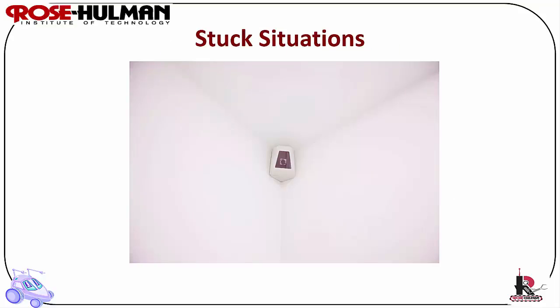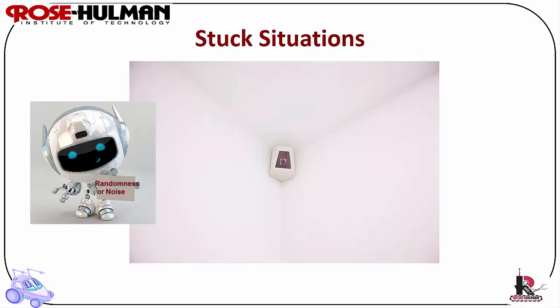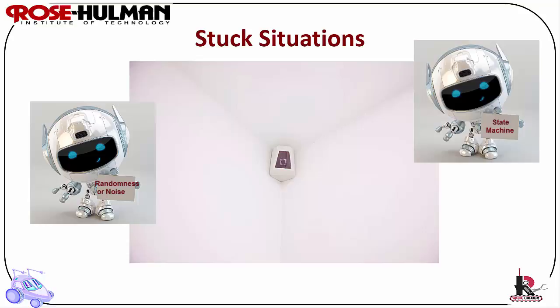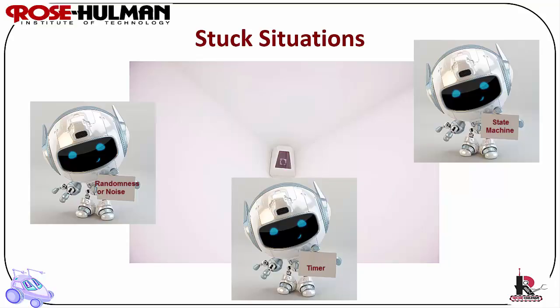Stuck situations: a reactive controller may get stuck if there is a default rule that covers some of the states. In wall following, this may be resolved by the following approaches. Introduce randomness to get the robot unstuck from a corner by having it turn by a random angle instead of a fixed one. Or keep a history and remember the direction the robot turned last, and use that information to make the decision about the next turn direction. Finally, have a timer that times the state, and if the robot has been in the state for too long, it should jump out of it to a different state.